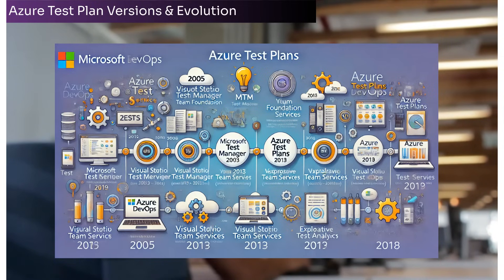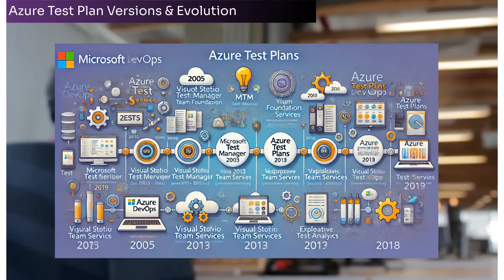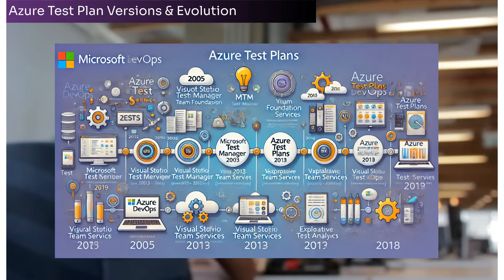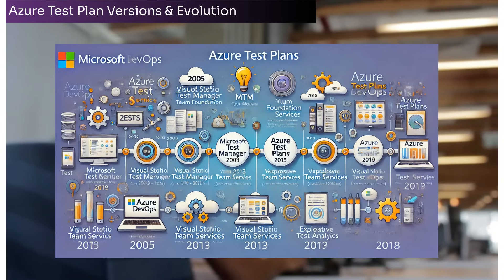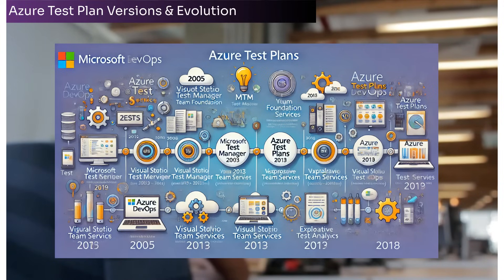Key trends shaping Azure Test Plans include: an increasing focus on shift-left testing, enabling early defect detection in the development process; enhanced support for cross-platform testing and multi-environment compatibility; adoption of cloud-native testing tools and tighter integration with the broader Azure ecosystem; and expansion of AI and ML-based testing features like test case prioritization and failure analysis. Azure Test Plans has evolved from a basic test management tool to a robust cloud-based solution for modern DevOps workflows, meeting the demands of agile and distributed teams.